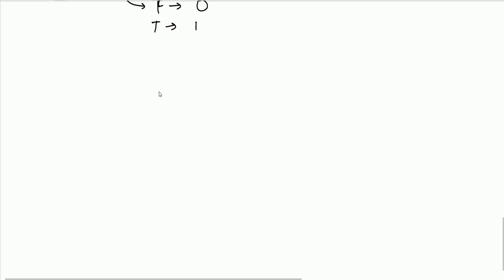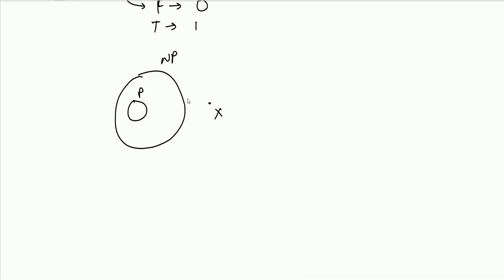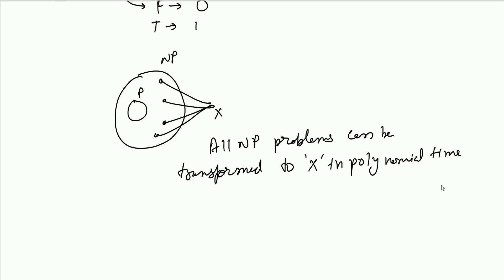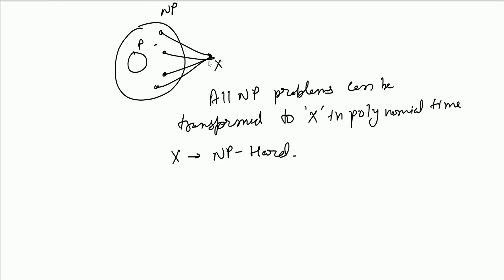This is why we study reducibility — it leads to our next term. Suppose there exists a problem X outside NP and every problem in NP is reducible to X in polynomial time. It's like a wrestling match where person X wins against everyone — X is the toughest. So X is NP-Hard — it is the hardest problem, to which all NP problems can be transformed.